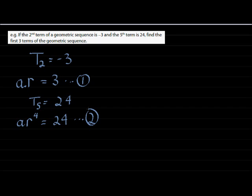If I take my second equation and divide it with the first equation - when we did arithmetic sequences we subtracted, this time we're dividing. If I take this second term and divide it with the first term, you'll notice the a's divide into each other to give 1. And r to the power of 4 divided by r to the power of 1 gives r to the power of 3, which equals 24 divided by negative 3, which is 8.